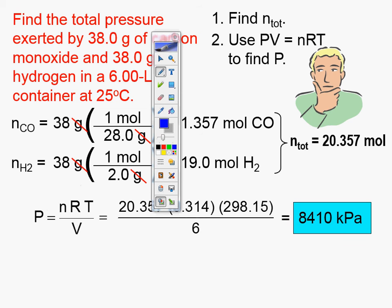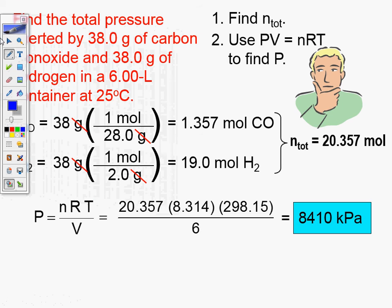I got 8410 kilopascals. If you used 0.08206, you get a slightly different number — about 82 atm. Divide that number by 101.325 to convert between units.